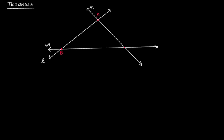Let's denote these three points by some letters: this is A, this is B, and this is C. Now if we look at the sections formed after the intersection of these three lines, you can clearly see — shown in green — these three line segments: AB, BC, and CA. These three line segments are forming a simple closed curve.